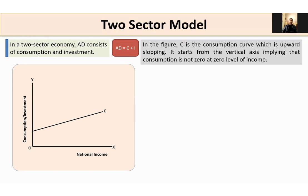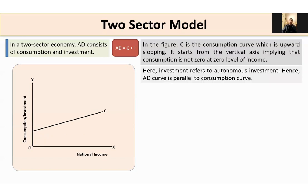In the figure, C is the consumption curve, which is upward sloping. It starts from the vertical axis, implying that consumption is not zero at zero level of income. Because of the positive relationship between consumption and the level of income, the consumption curve is upward sloping. The distance from the origin to the starting point of the consumption curve is known as autonomous consumption — that is, consumption at zero level of income.